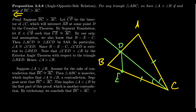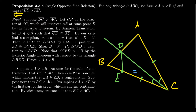Looking at those two triangles: segment EC and AC are congruent to each other; the angles at C — angle ACD and angle ECD — are congruent to each other by the bisector; and segment DC is shared by both triangles, so it's congruent to itself. We have a side-angle-side situation. By SAS, these two triangles are congruent. Therefore, by corresponding parts of congruent triangles, angle A is congruent to angle CED.